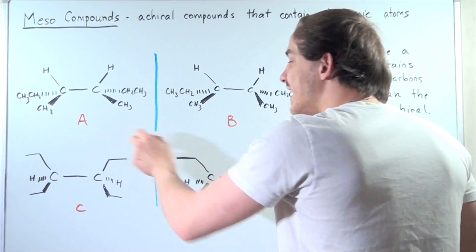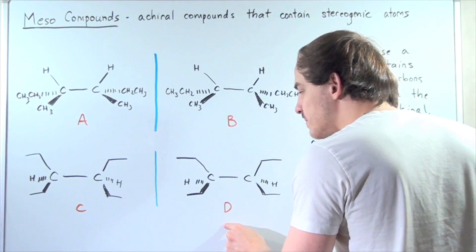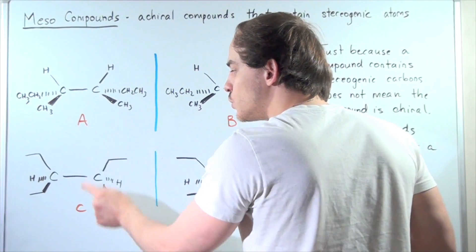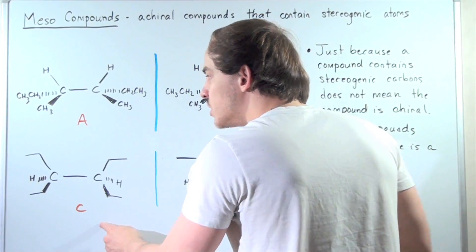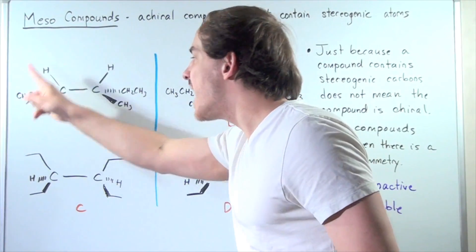In fact, A is the same molecule as B, and C is the same molecule as D. And therefore, since these two compounds, A and C, do not have mirror images, that means they're achiral.